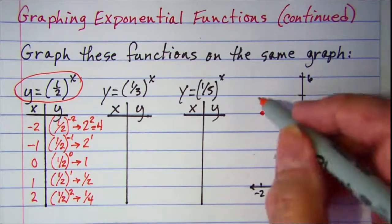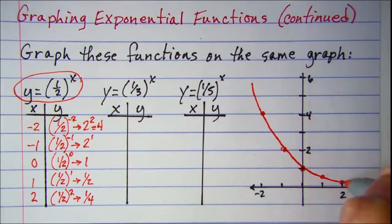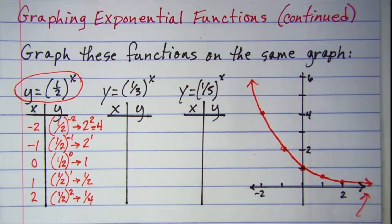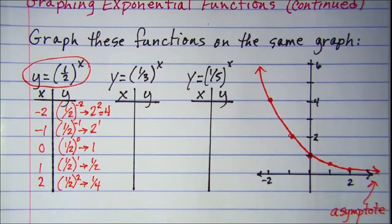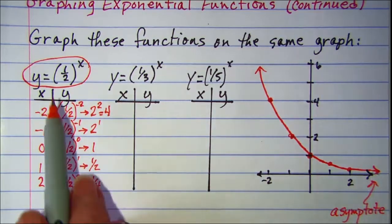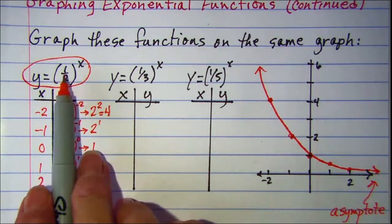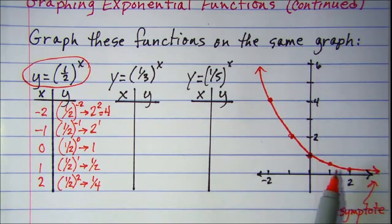So our exponential curve looks like this. We do again have an asymptote at the x-axis. The reason for that is because it doesn't matter what power you raise a base to — as long as that base is a positive number, you'll never get 0. So our graph will never cross the x-axis.